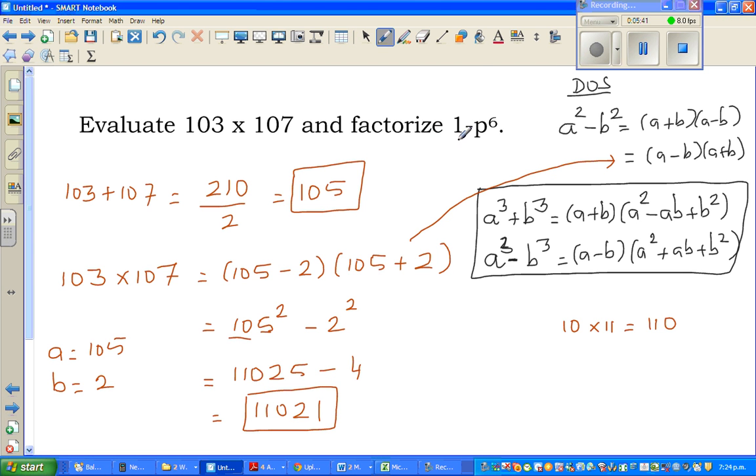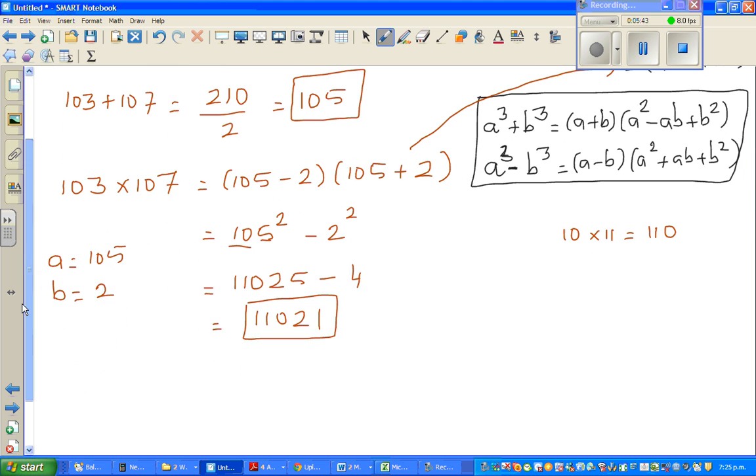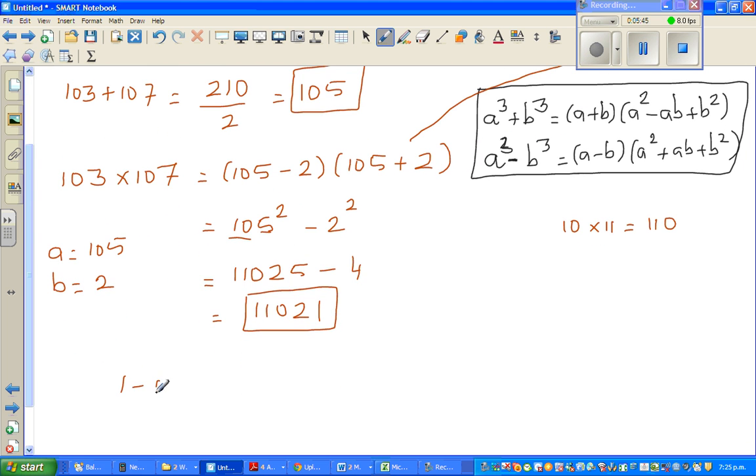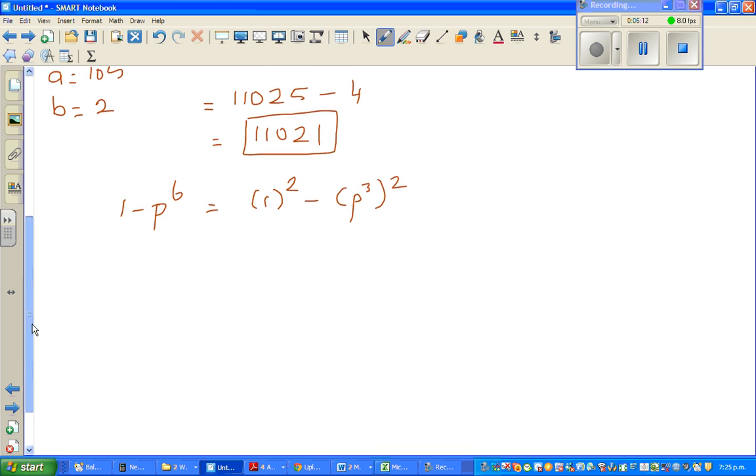Now we're going to use factorize this. So 1 minus p to the power 6 is, I can write this as 1 squared minus p, what can I write? P cubed, p squared, I have to write p cubed squared because I want to write difference of 2 squared, so I have to write p cubed squared, because 3 times 2 is 6. So power of power, you multiply the power.